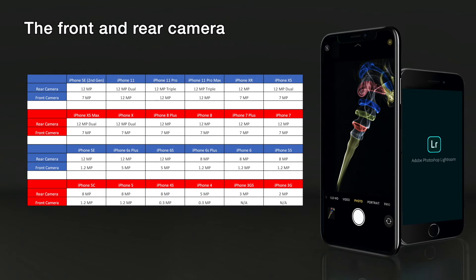Furthermore, the iPhones earlier like the 5 and the 6 only have a 1.2 megapixel front camera.